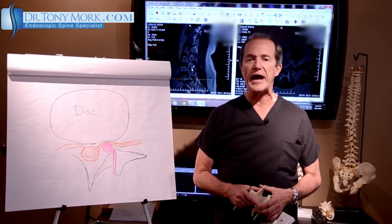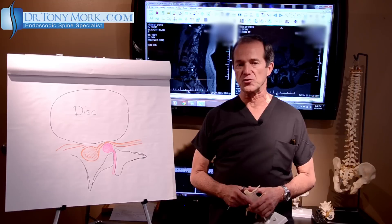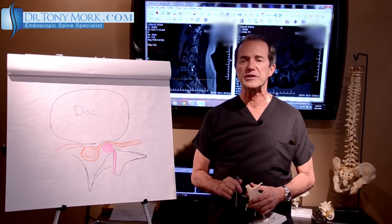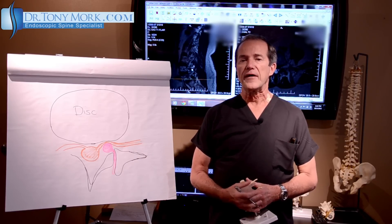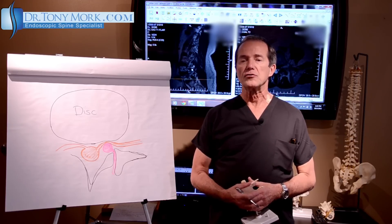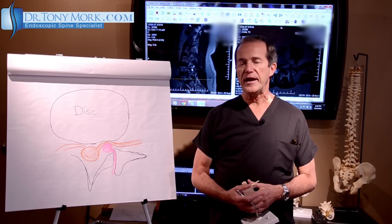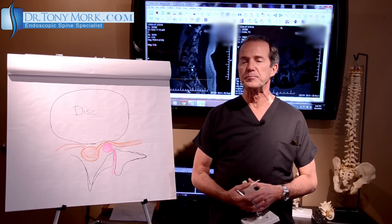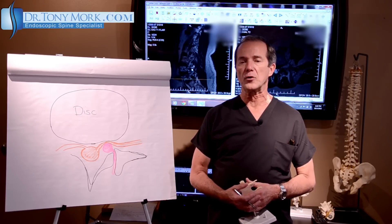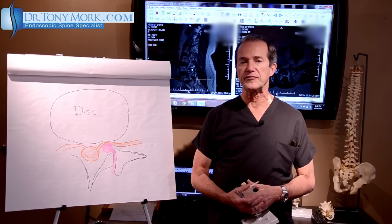A synovial cyst is really an outpouching of the lining of the facet joint. It occurs because as we get older and the joints become a little bit more worn out, fluid builds up in order to try to help lubricate these joints. The excess buildup of fluid creates a little bit of pressure and even an outpouching and ballooning of the lining or covering of the facet joint.